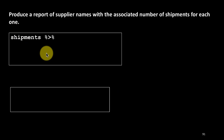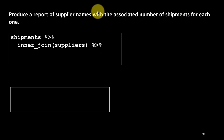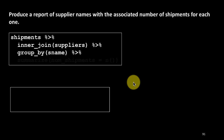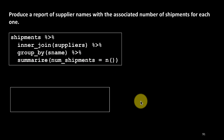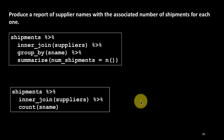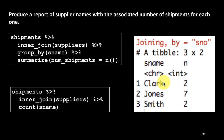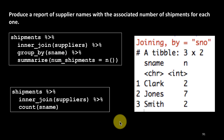Now let's look at something slightly more complicated. We want a report of supplier names with the associated number of shipments for each supplier — for example, Smith 20 shipments, Jones 5 shipments — a summary report. We use group by and summarize, or simply count. We inner join shipments with suppliers, then either group by supplier name and summarize count, or just use count with supplier name. Both give the same result: Clark made two shipments, Jones made seven, Smith made two, for a total of 11 shipments. This shows how we can join and then apply grouping, summarizing, and counting.